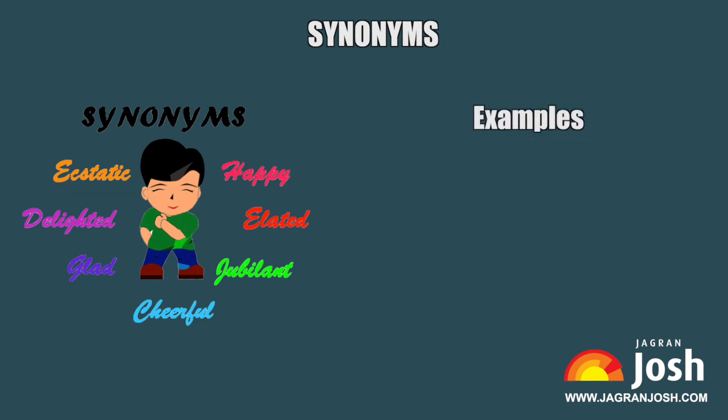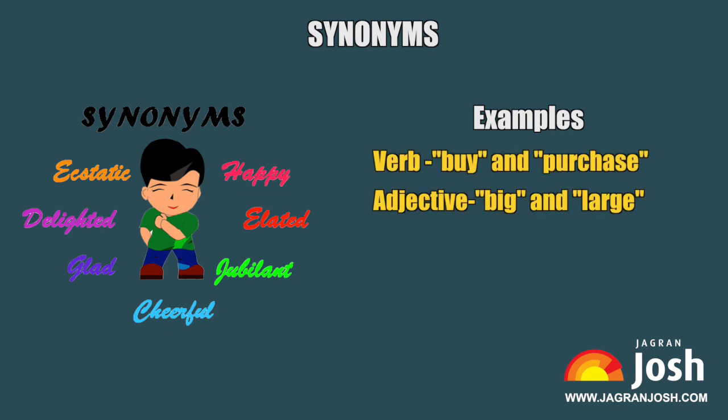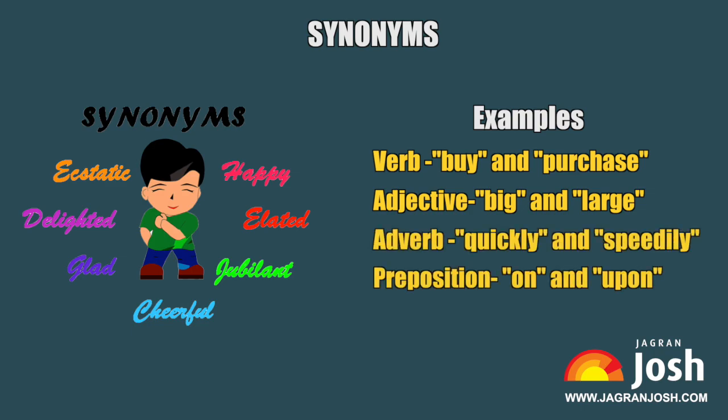Some examples of English synonyms: Verb — buy and purchase. Adjective — big and large. Adverb — quickly and speedily. Preposition — on and upon.